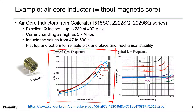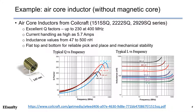The typical Q or quality factor versus frequency is shown in this picture. You can see different curves of Q factor under different inductance values. High Q factor means less power loss. Generally, air-core inductors have relatively low inductance. In this particular family, the inductance ranges from 47 nH to 500 nH. For now, it's okay if you don't fully understand these curves — I will teach you the basic parameters in the datasheet in the following lectures.